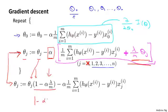Concretely, this term one minus alpha times lambda over m is going to be a number that's usually a little bit less than one, because alpha times lambda over m is going to be positive. And usually, if your learning rate is small and if m is large, this is usually going to be pretty small. So this term is going to be a number like 0.99, let's say.